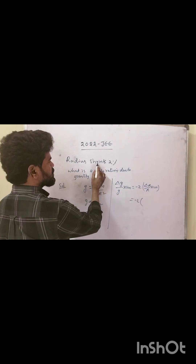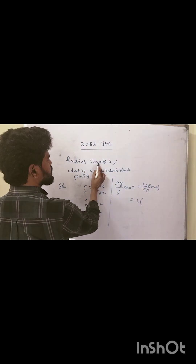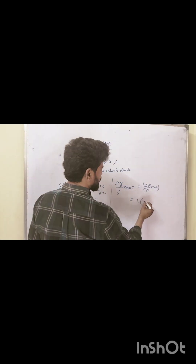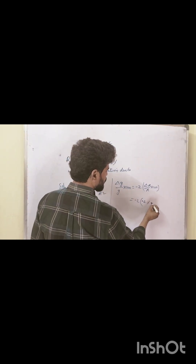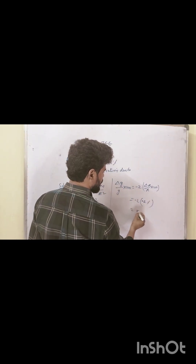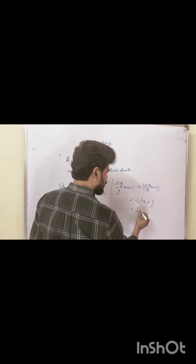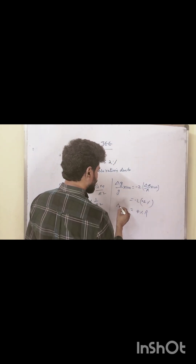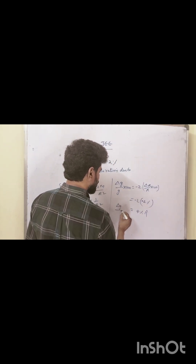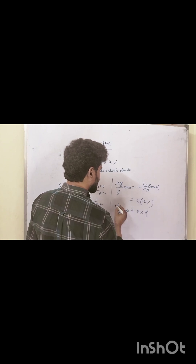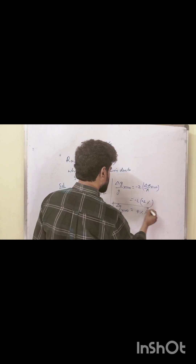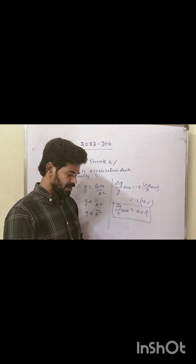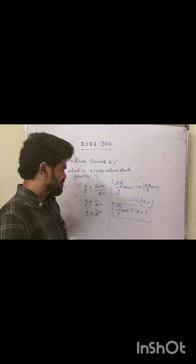Here in the question, radius shrinks by 2 percent, that means delta r by r into 100 equals minus 2 percent. So minus 2 into minus 2 gives plus 4 percent. Therefore, delta g by g equals 4 percent — acceleration due to gravity increases by 4 percent.